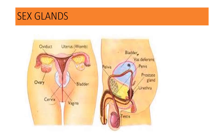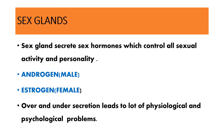Sex glands also play a major role in behavioral control. They secrete sex hormones which control sexual activity and personality. Androgen is the male sex hormone and estrogen is the female sex hormone. Over- or under-secretion of these hormones leads to physiological as well as psychological problems, confirming that sex glands are related to behavioral problems.